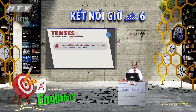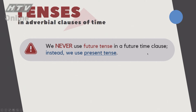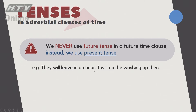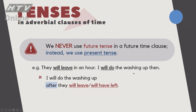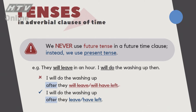Lưu ý quan trọng: we never use future tenses in a future time clause; instead, we use present tense. Đối với mệnh đề chỉ thời gian, dù diễn đạt ý tương lai, chúng ta vẫn không dùng 'will', mà dùng present tense. Ví dụ: 'I will do the washing up after they leave.' Hoặc để nhấn mạnh họ đi rồi mới dọn rửa: 'after they have left.' Câu 'after they will leave' là sai.